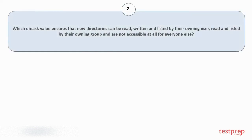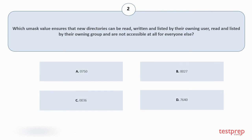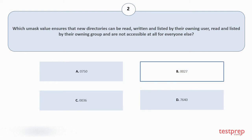Question number 2: which UMASK value ensures that new directories can be read, written, and listed by their owning user, read and listed by their owning group, and are not accessible at all for everyone else? Your options are: a. 0750, b. 0027, c. 0036, d. 7640. The correct answer is option B.